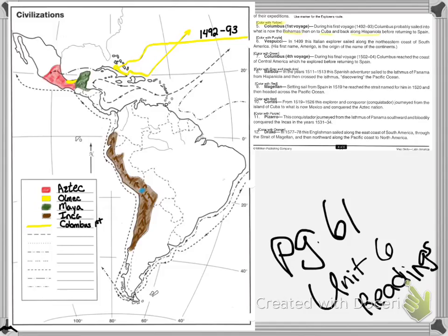Now let's go on to Vespucci. In 1499, this Italian explorer sailed along the northeastern coast of South America. His first name, Amerigo, is the origin of the name of the continents, because he was a cartographer and navigator. When he returned, a friend used his notes, drew the map of America, and gave the continents his name.